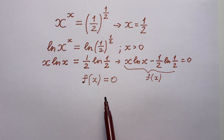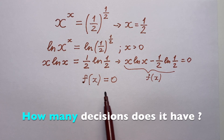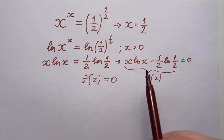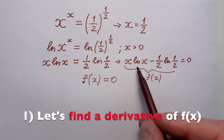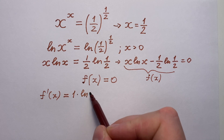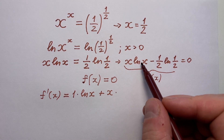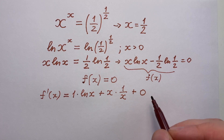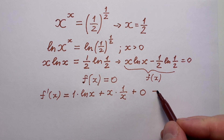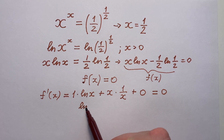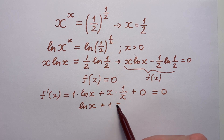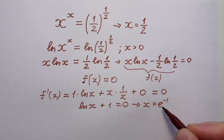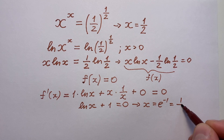But first, let's check how many solutions this equation can have by exploring the monotonic properties of this function. Let's find the derivative of f. The derivative equals natural logarithm x plus x times one over x, which simplifies to natural logarithm x plus one. Setting this equal to zero, we get natural logarithm x plus one equals zero, and the solution is x equals e to the power of minus one, or one divided by e.